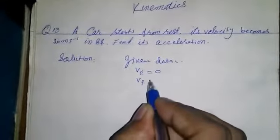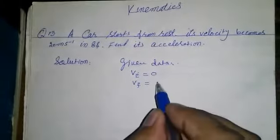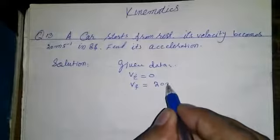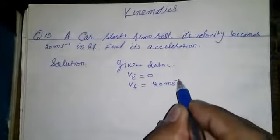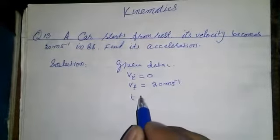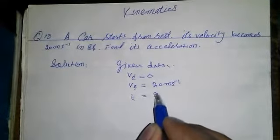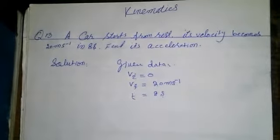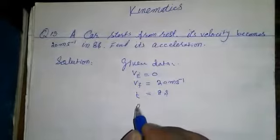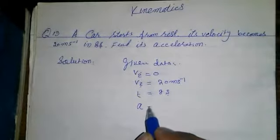Final velocity Vf is equal to 20 meters per second. Time t equals 8 seconds, and we have to find its acceleration a.